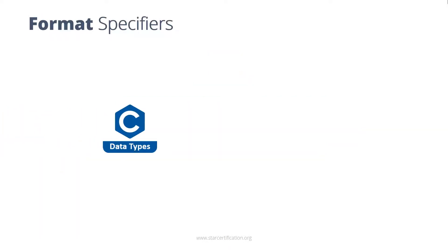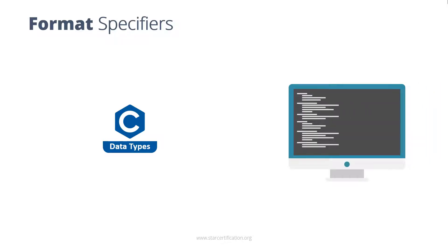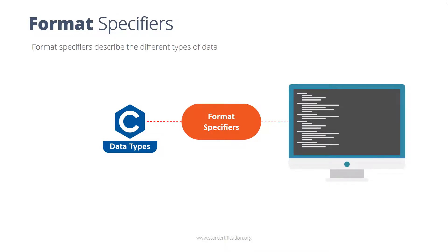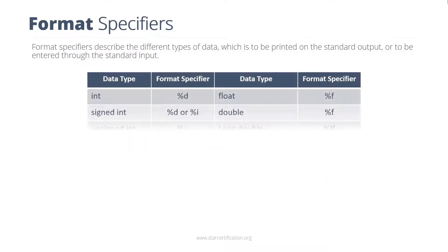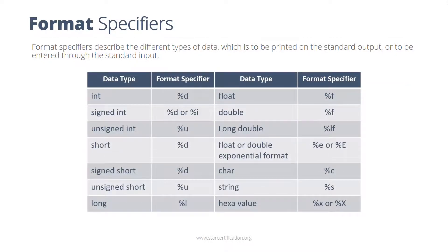To display these data types appropriately on the screen, you need format specifiers. Format specifiers describe the different types of data to be printed on the standard output or entered through the standard input. To define format specifiers, you need to use the special symbol percentage (%). The format specifiers supported by C language are shown on the screen.